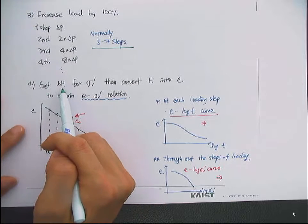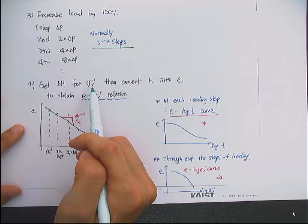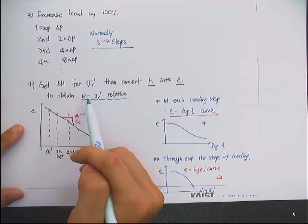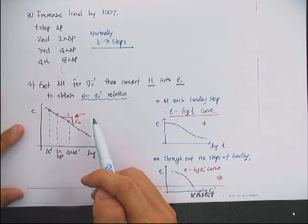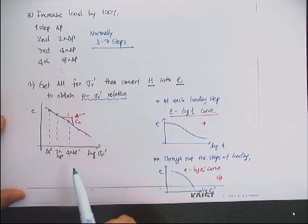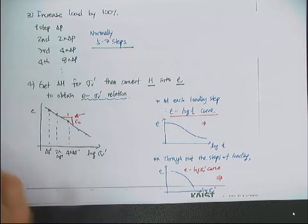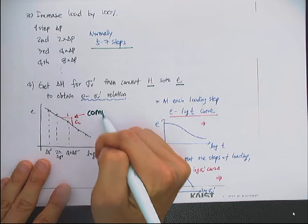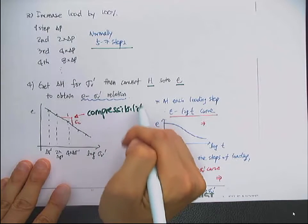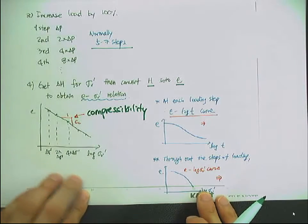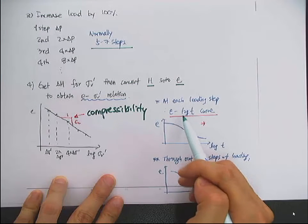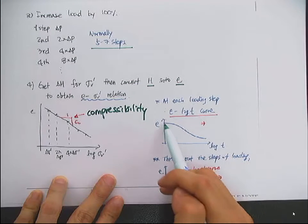You get the delta H — the height change — for the effective stress applied. Then you convert H into the void ratio. You can obtain the e versus vertical effective stress relations like this curve. The slope of this e versus vertical effective stress curve is called the compressibility. At each loading step, you get the e versus logarithmic time curve — the e versus log t curve. This can tell you how fast the settlement occurs.